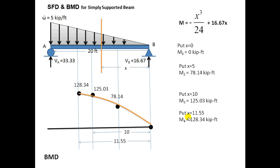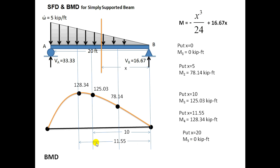The maximum bending moment is 128.34, occurring at X = 11.5 where the shear force is zero. At X = 20, the moment value is obtained, and the moments at the roller and pin supports must be zero. This completes the bending moment diagram.